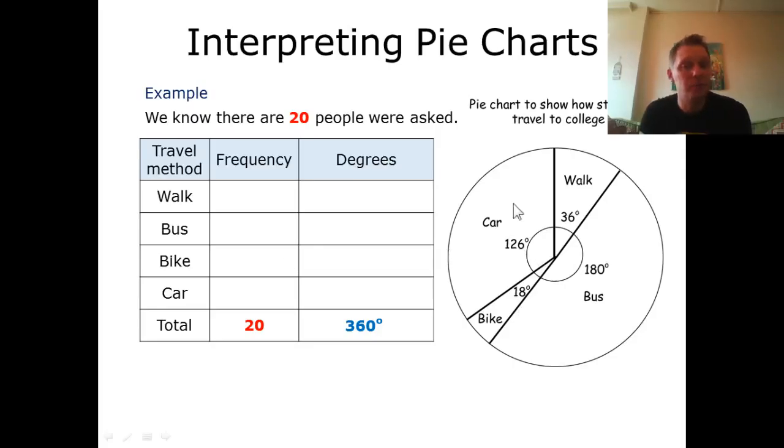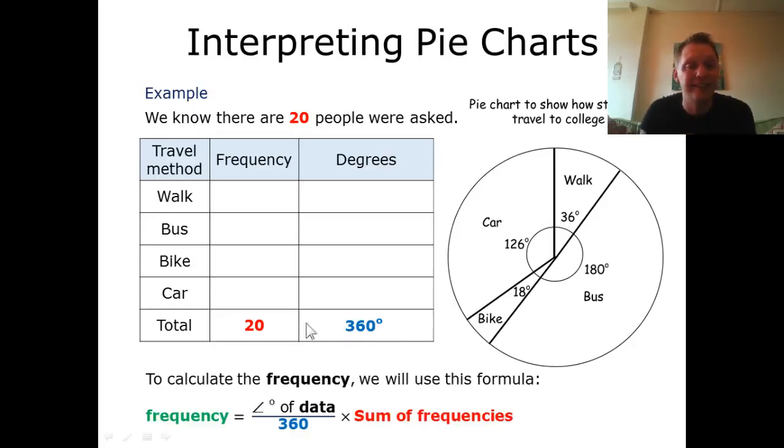So I'm going to be doing that with exactly the same example. 20 people were asked, and we've got 360 degrees here which represents all the degrees added together. We are going to be using these two values to find one of the frequencies. Our frequency is going to equal our degrees for our category divided by 360 and then multiplying it by our sum of frequencies, so 20.